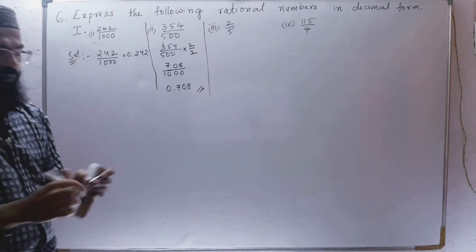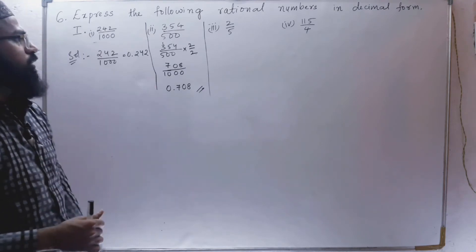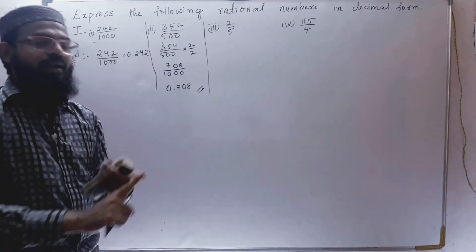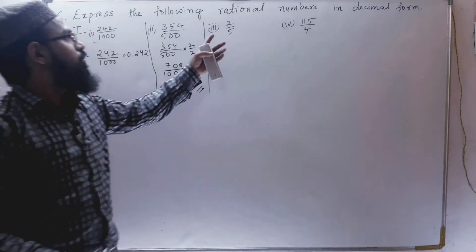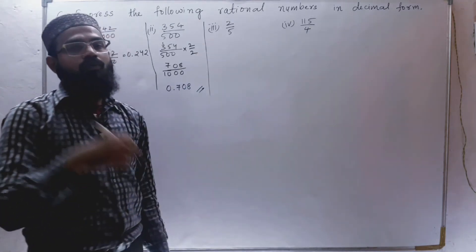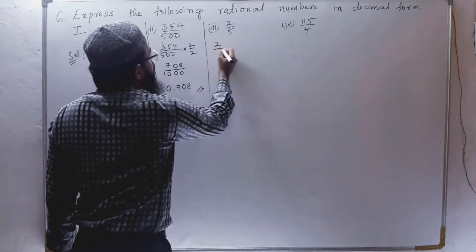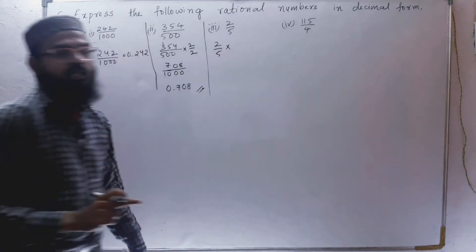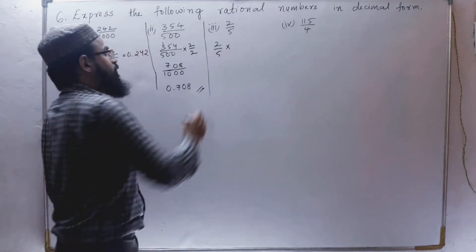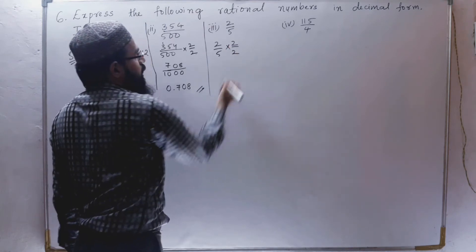So we have to remember how we are going to get the zero in the denominator. If we are having 2, we should multiply with 5. If we are having one 5, single 5, then we will multiply and divide with 2. So see here, 2 by 5 is there. In the denominator, you can see only single 5 is there. Let us multiply this with 2 and divide by 2.